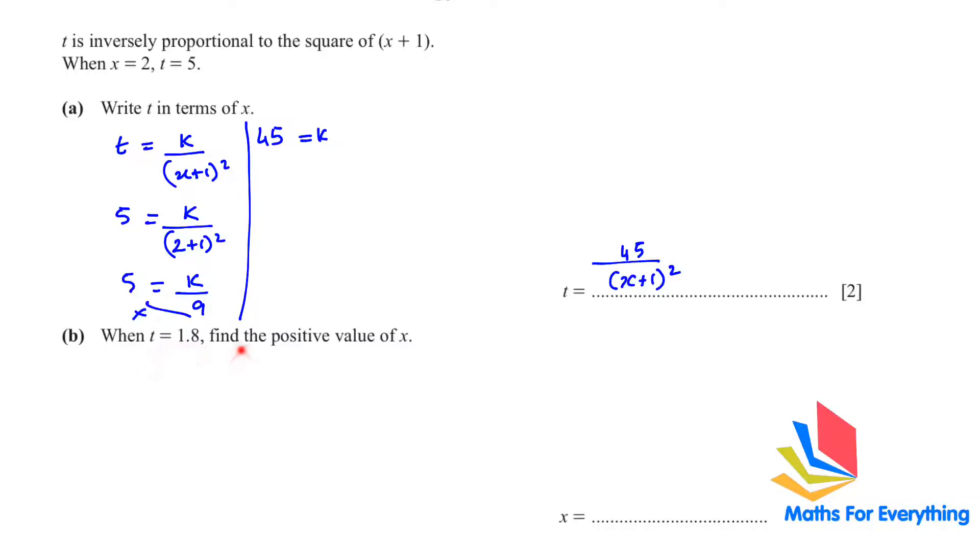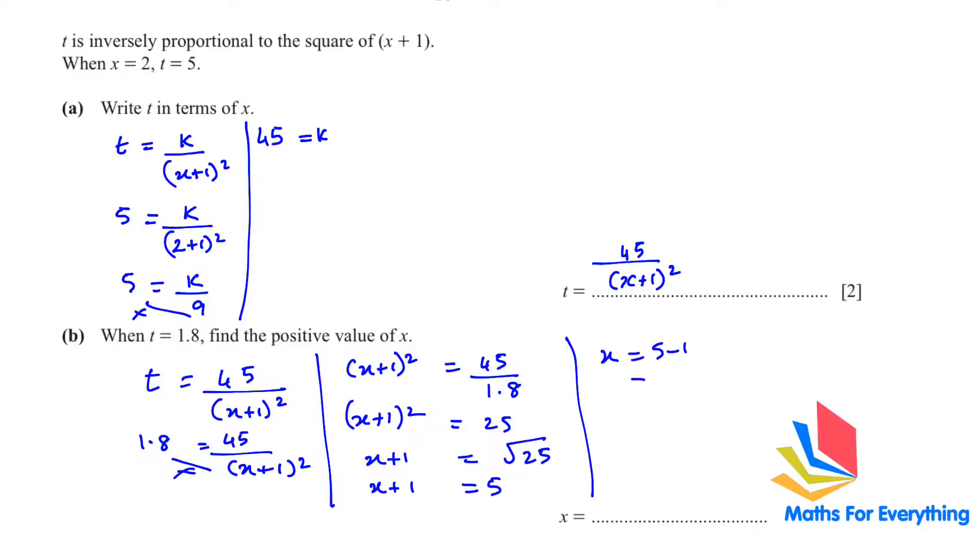When t equals 1.8, find the positive value of x. We know that t equals 45 over (x + 1) square, and now the value of t is given to us so we replace it. We will cross multiply here, and (x + 1) square equals 45 over 1.8, which gives us 25. If we have a square and we want to remove it, we square root the other side. Because we want only the positive value, we will not put the negative sign. So x + 1 equals 5 and x equals 5 minus 1 which is 4.